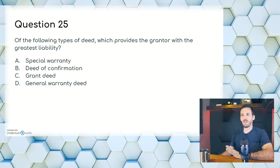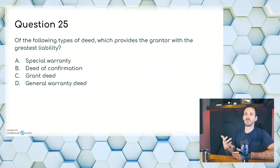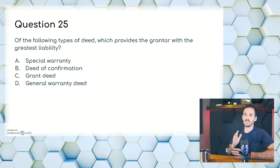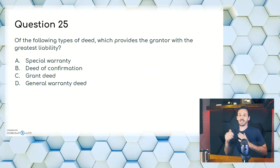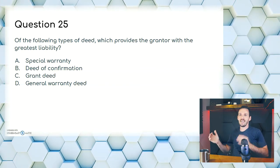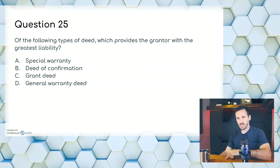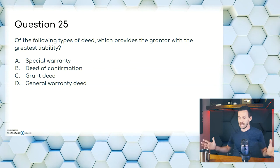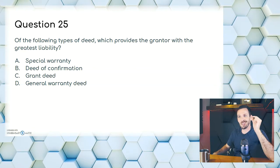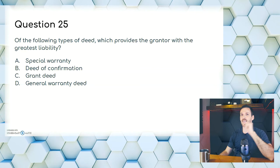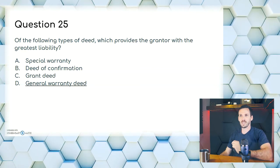Question twenty-five: of the following types of deed, which provides the grantor with the greatest liability? A, special warranty; B, deed of confirmation; C, grant deed; or D, general warranty deed. This is the opposite of a previous question. The general warranty deed gives a buyer the greatest protection — therefore it gives the seller the most liability. D is the answer, general warranty deed.